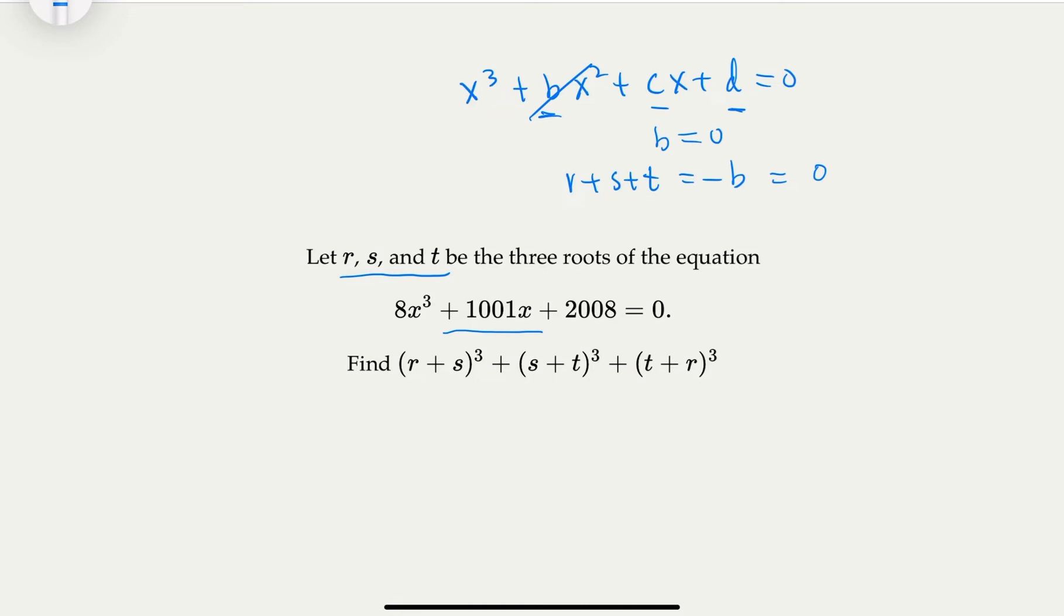Now, you realize then r plus s would equal to negative t, this would equal to negative r, this would equal to negative s. So the sum we would like is actually equal to negative t, negative r, and negative s to the cube. In other words, in our notation, this would be negative of S₃.